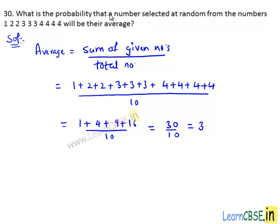Now we need to find the probability that a number selected at random from the given numbers will be 3. Let E be the event of getting selected number as 3.